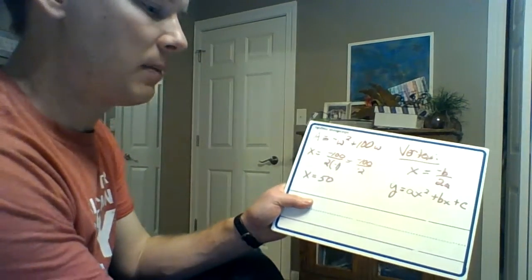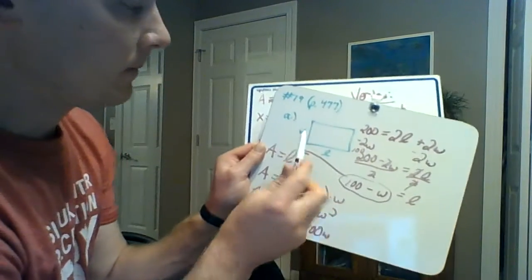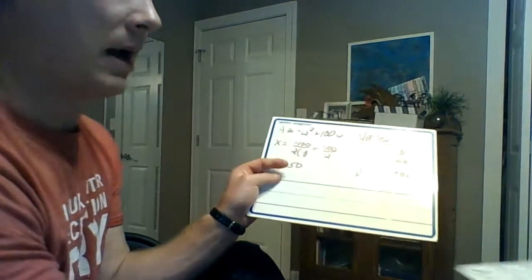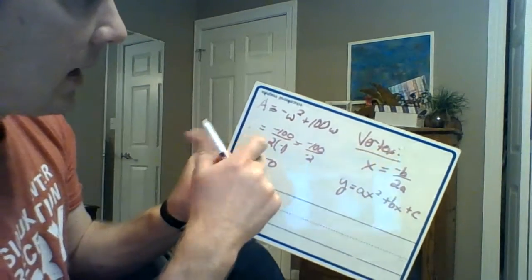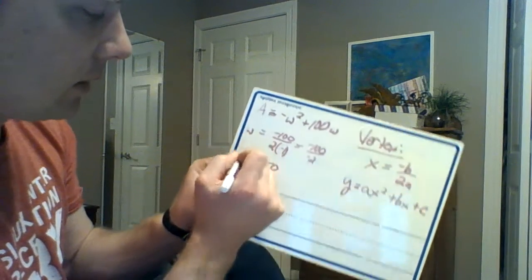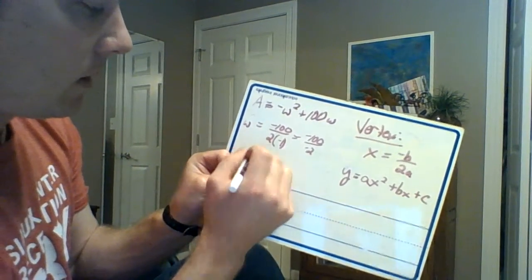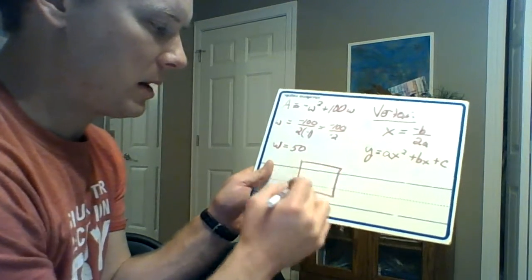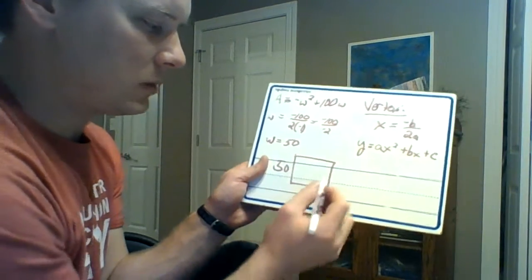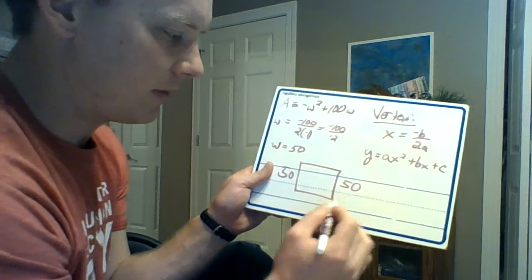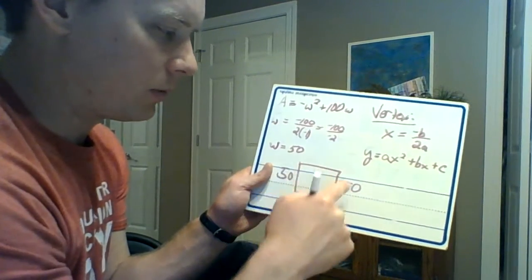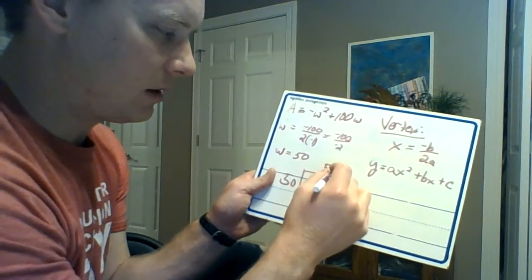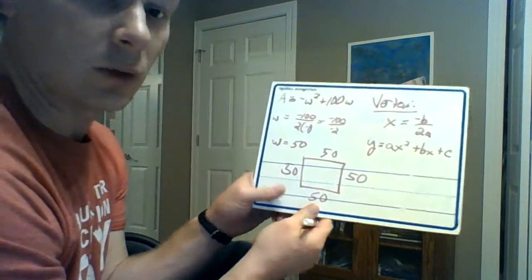So if we go back to our original rectangle and we make W equal 50—this x was actually W in our case here—that means this side would have to be 50. Well, in order for this perimeter to be 200, that's 100 of it, this has to be 50 and 50 as well. So the dimensions would be 50 meters by 50 meters.